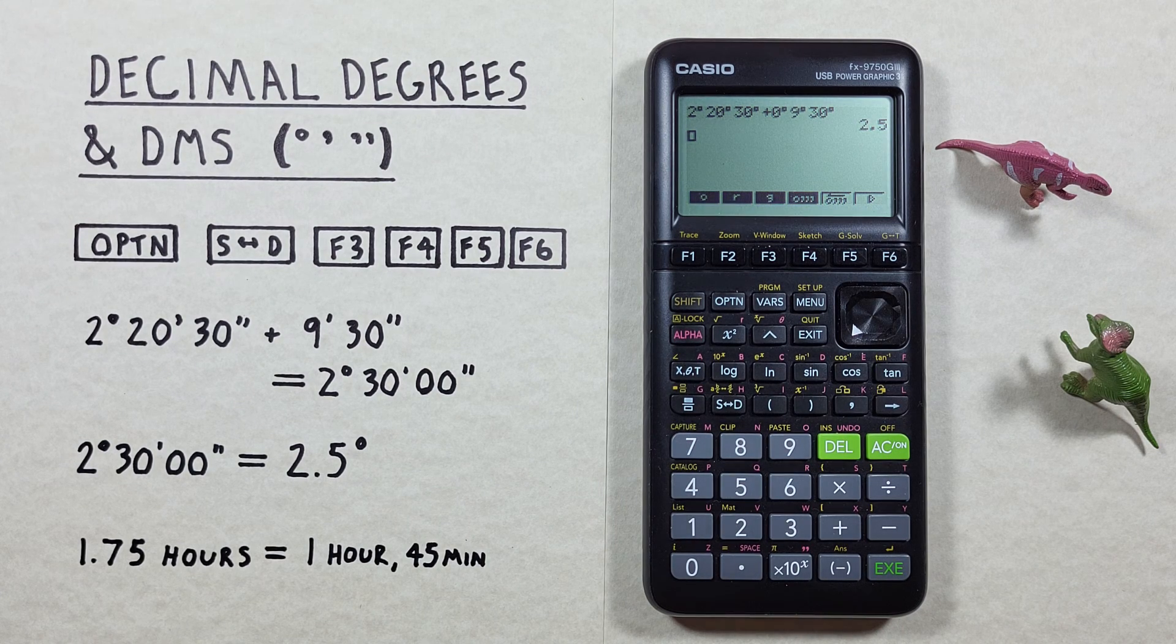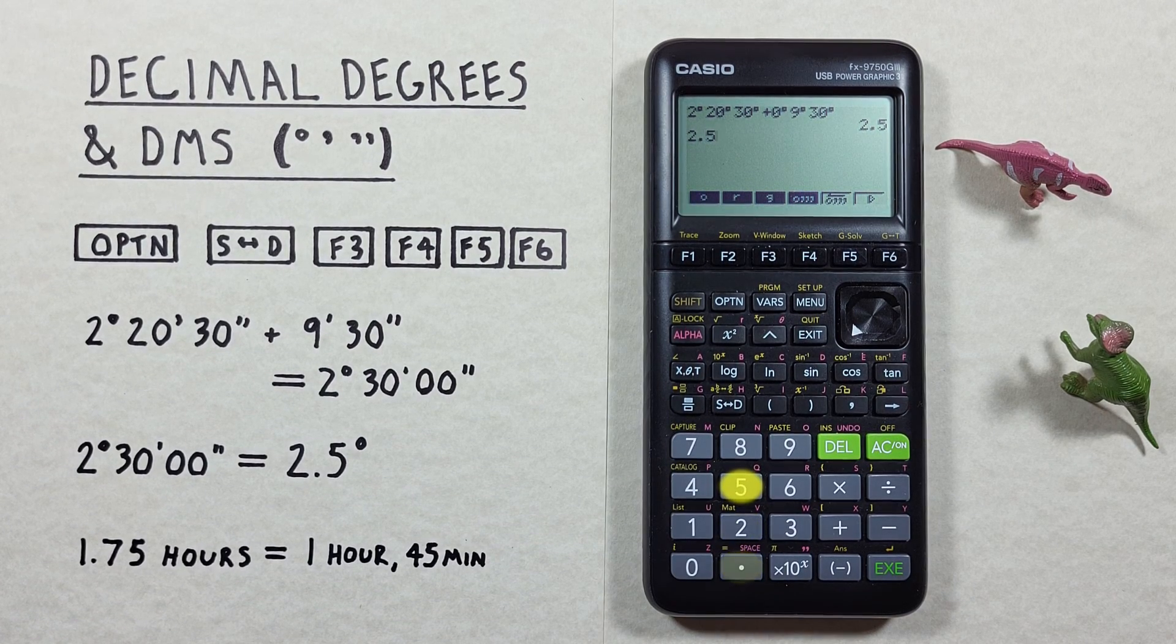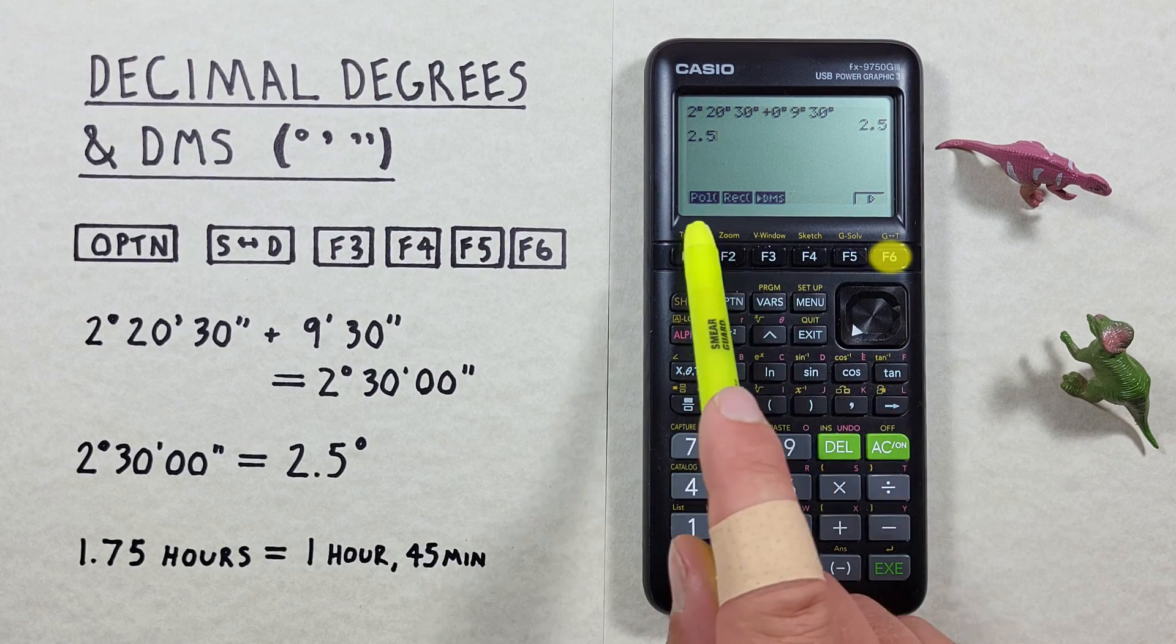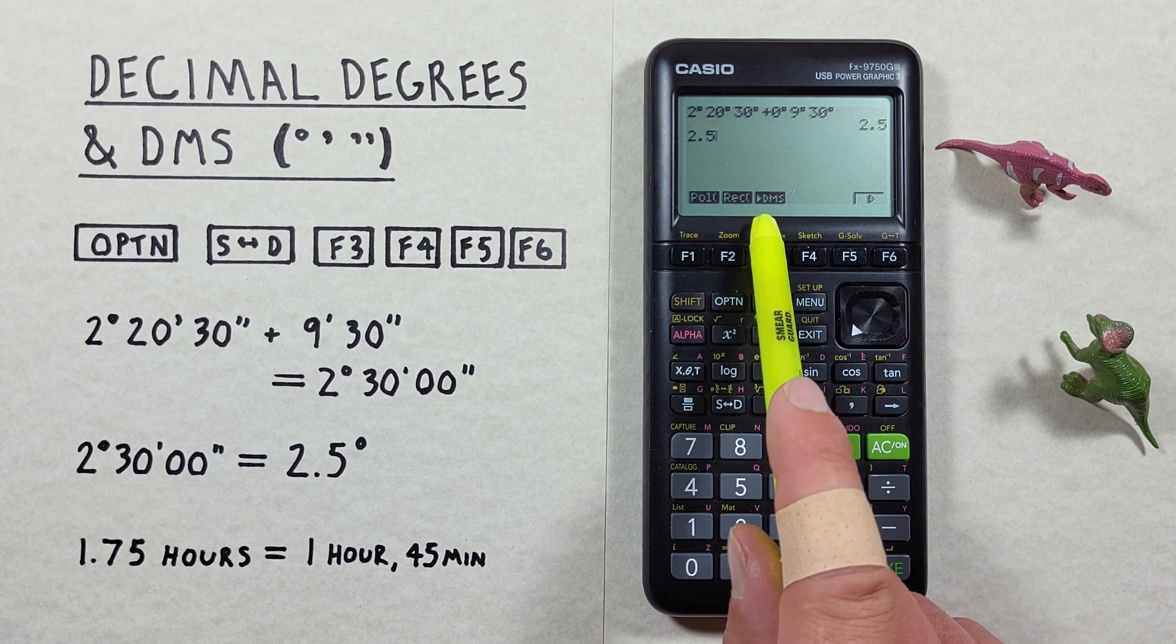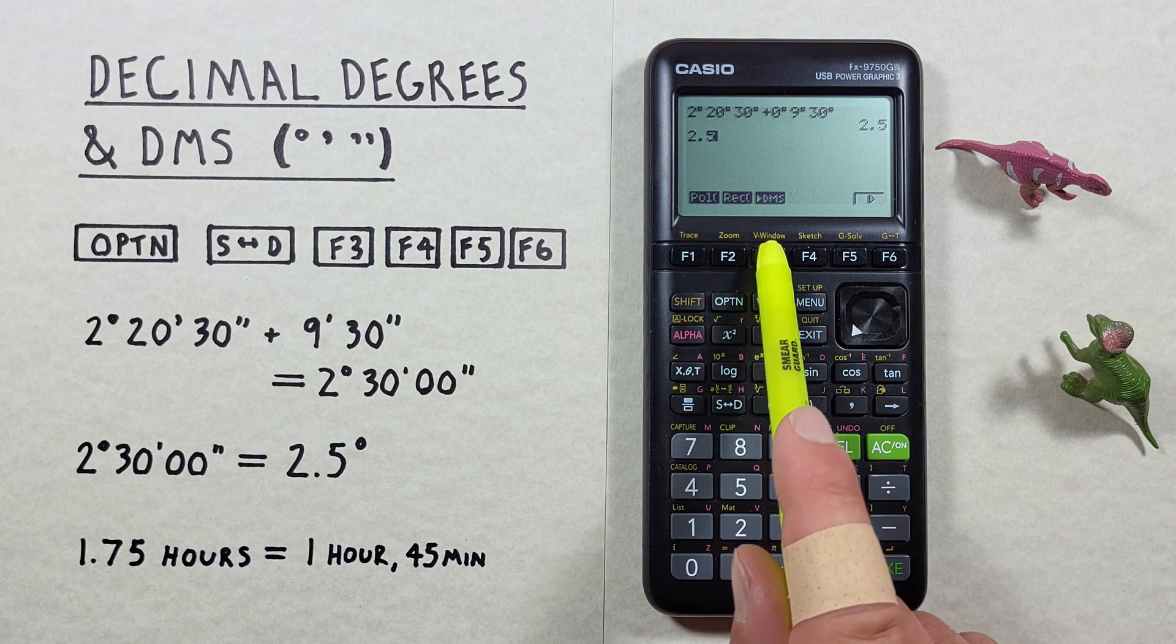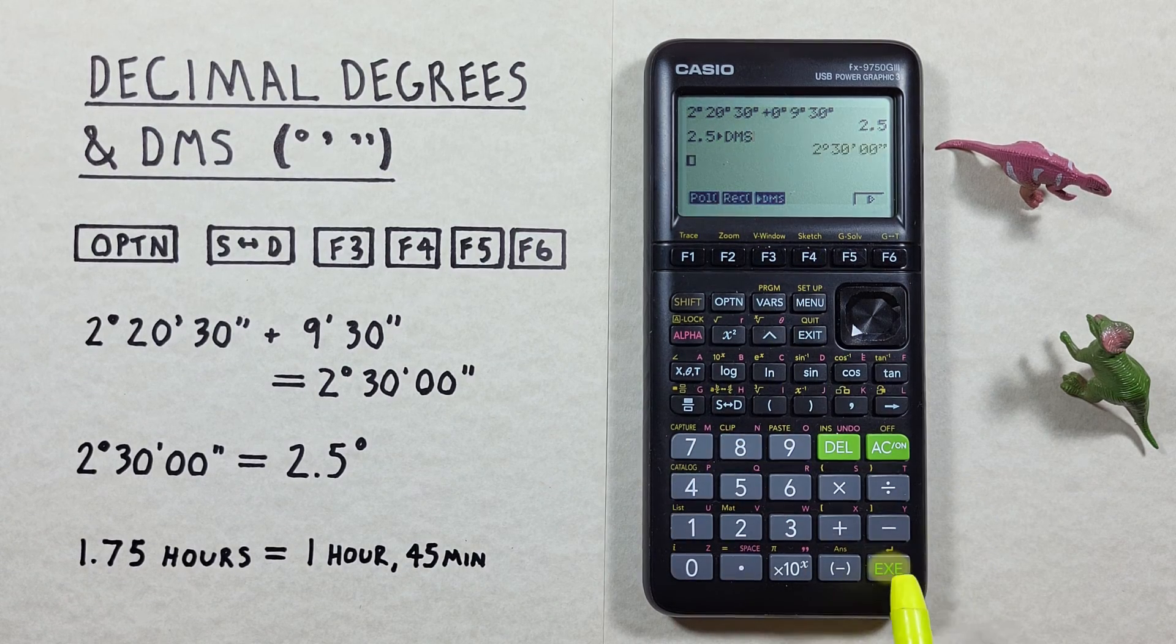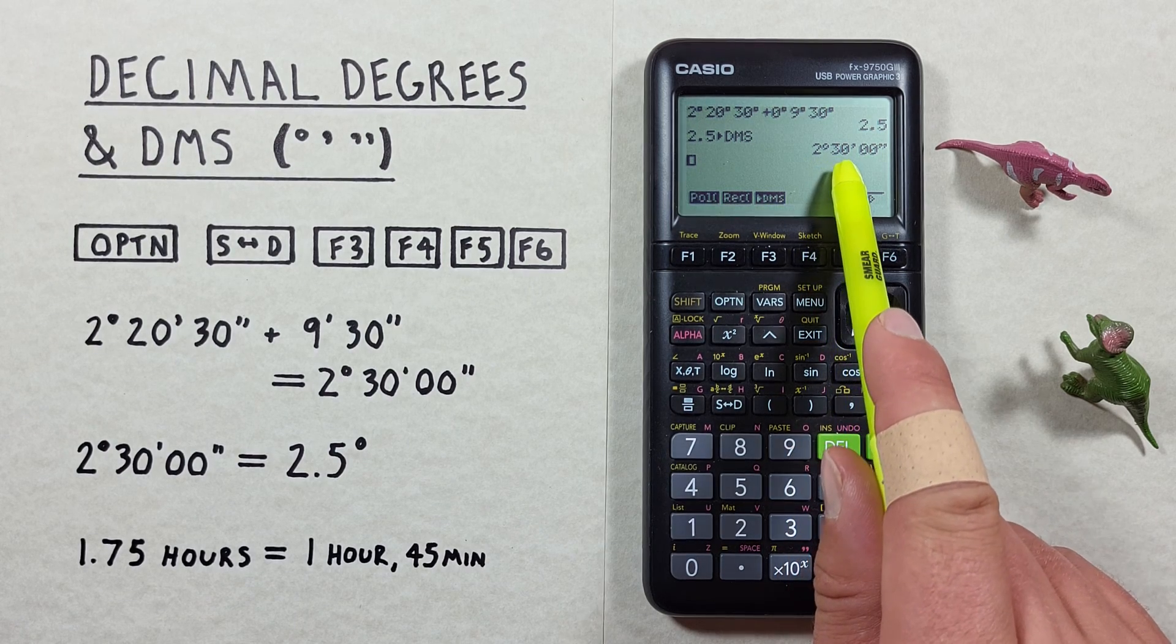Another option is if we're given that 2.5 decimal degrees and want to convert that straight to our degrees minutes seconds, we can hit the F6 key so that we come to this set of options and we see under F3 we have a convert to degrees minute seconds. So if we hit that we get 2.5 decimal degrees into degrees minute seconds and we hit exe we see we get our 2 degrees 30 minutes 0 seconds.